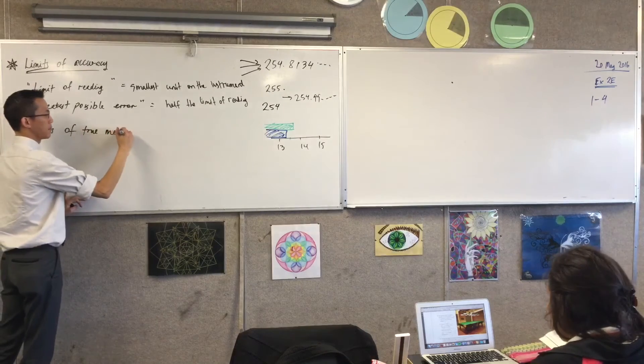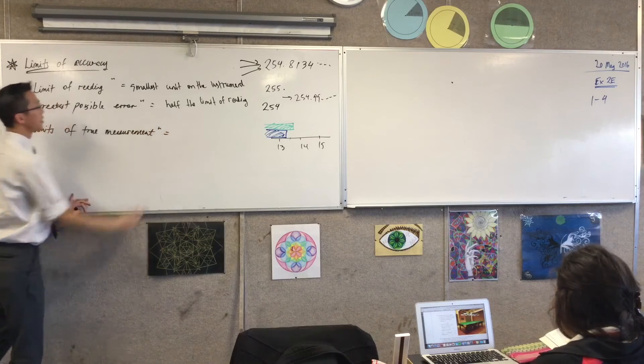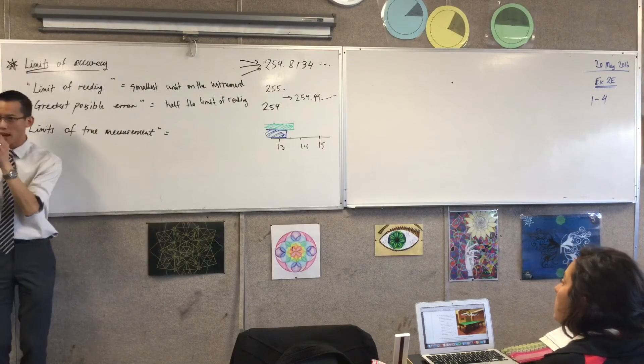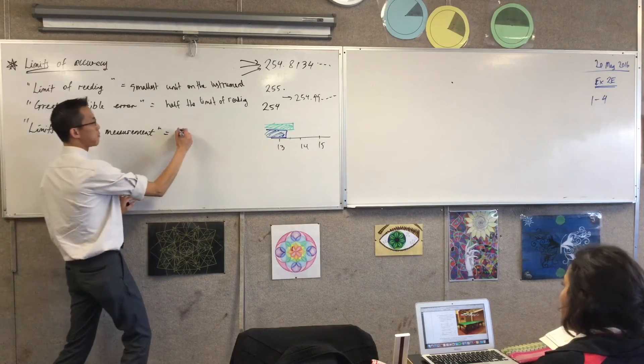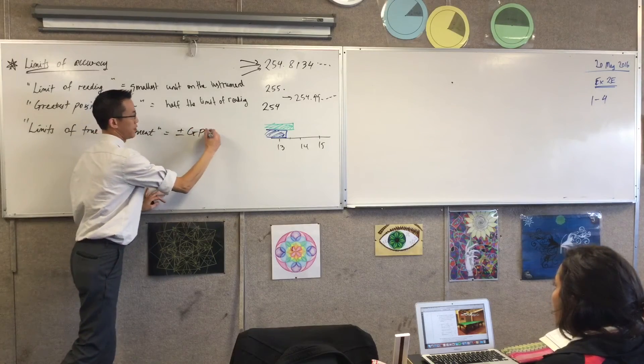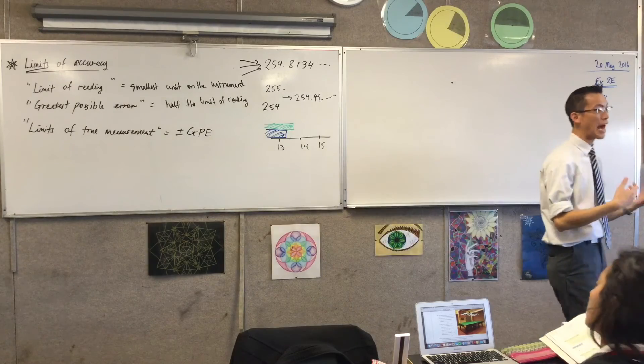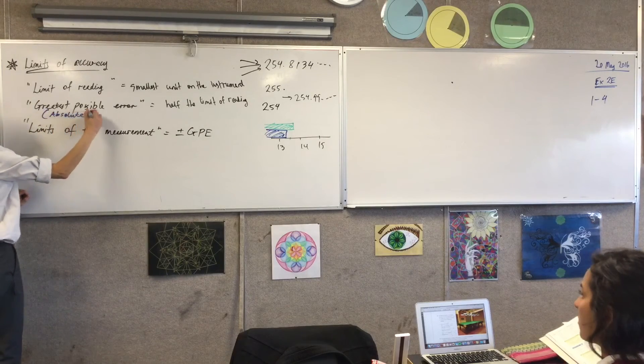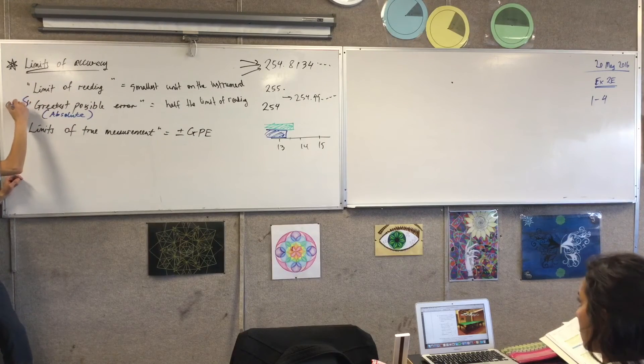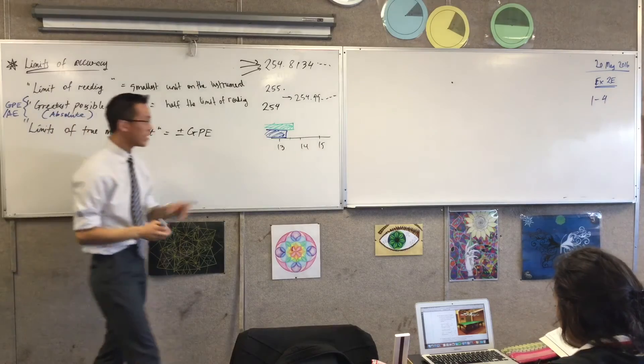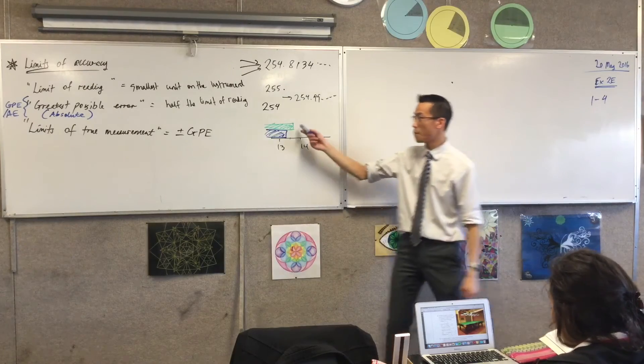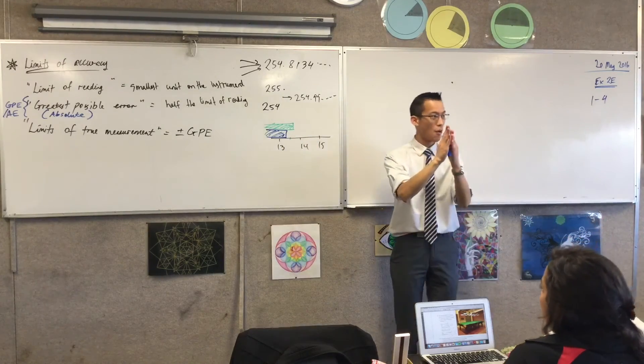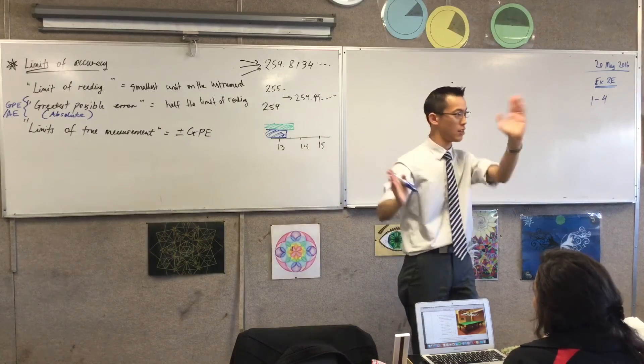or the upper and lower limits of true measurement. So, we've got the limit of reading, which is like, well, just look at the units. Just tell me what the units are. You don't even need an object. And then you've got, well, what can you truly measure? It's going to be half of those units on either side. So, we'd say plus or minus the greatest possible error, and they use the acronym GPE for that. You sometimes also see AE, which means absolute error, which means exactly the same thing. So, you've got the GPE and the AE, which are actually the same thing, just different names. So, on here, we'd say, okay, the limits of true measurement on this thing are plus or minus half a centimeter. So, this object that I've measured, and I've told you it's 13, it could be anywhere 13 plus or minus that half a centimeter. So, 12.5 to 13.5. Does that make sense?